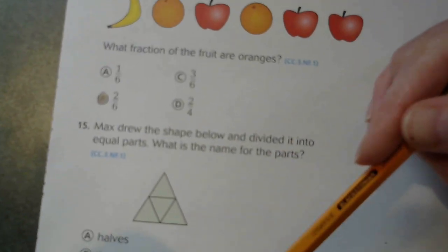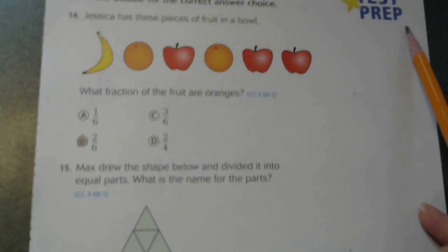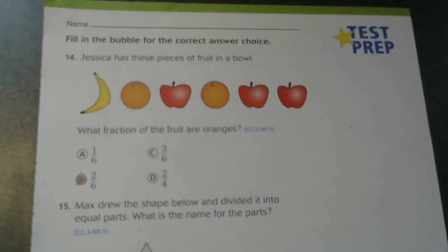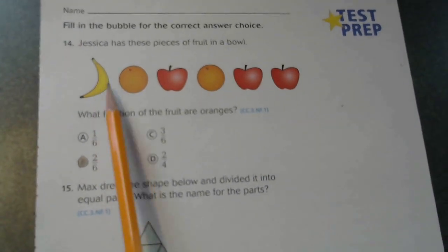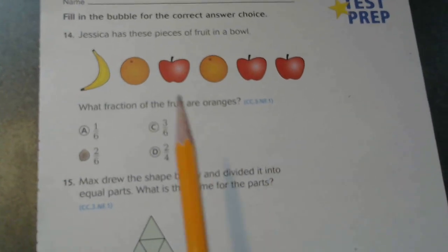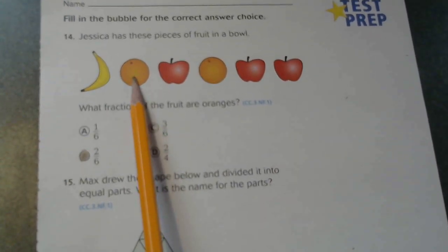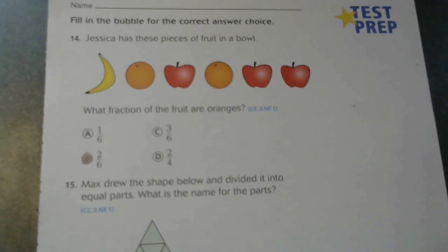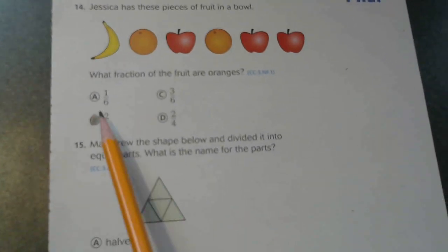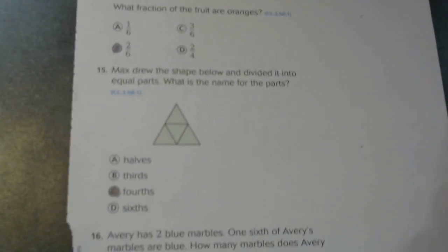The next one says fill in the bubble for the correct answer. Jessica has these pieces of fruit in a bowl. What fraction of the fruit are oranges? One, two, three, four, five, six is our denominator. And she has one, two. Two of six are what she has that are oranges. Two six is your answer.